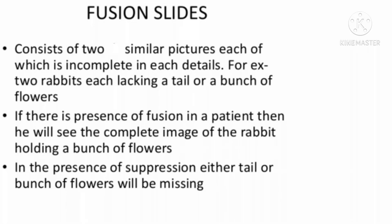Next is fusion slides. Fusion slides consist of two similar pictures, each of which is incomplete in one detail. For example, in one slide rabbit has a tail but there is no bunch of flowers. And on the other slide, rabbit has a bunch of flowers but there is no tail.